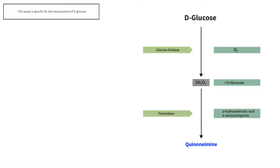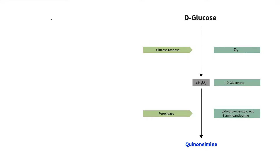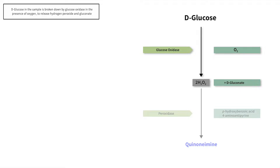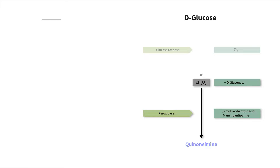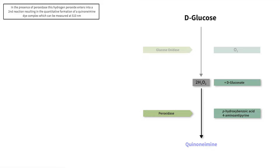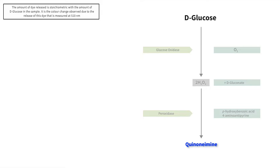This assay is specific for the measurement of D-glucose. The principle of the D-glucose GOPOD reaction involved in the measurement of glucose is shown in this figure. D-glucose in the sample is broken down by glucose oxidase in the presence of oxygen to release hydrogen peroxide and gluconate. In the presence of peroxidase, this hydrogen peroxide enters into a second reaction resulting in the quantitative formation of a quinoneimine dye complex which can be measured at 510 nanometres. The amount of dye released is stoichiometric with the amount of D-glucose in the sample, and it is this color change that is measured at 510 nanometres.